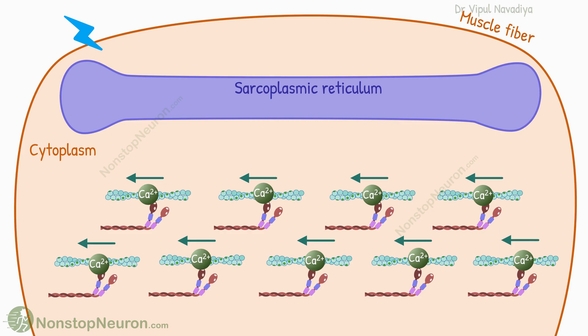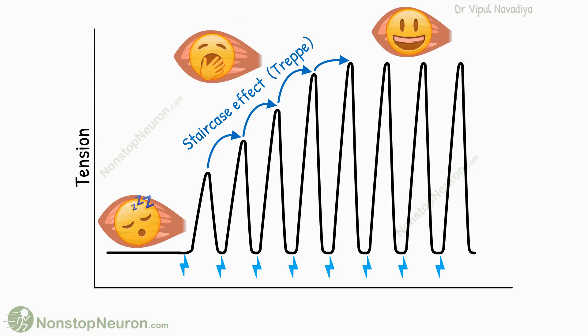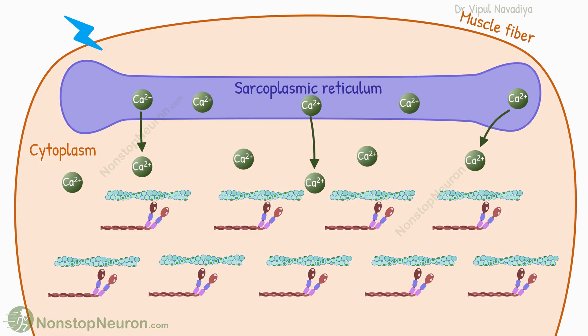So this was the staircase phenomenon, or TREP. In summary, when a muscle is stimulated after a long period of rest, successive stimuli produce a progressively stronger contraction. This is believed to be due to progressively increasing calcium ions in the cytosol with each successive stimulus.